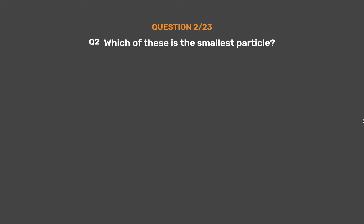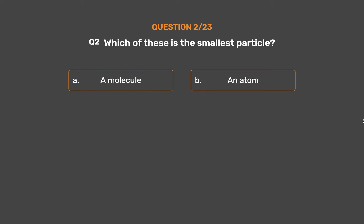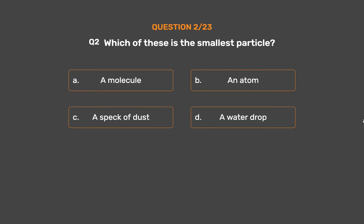Question number 2. Which of these is the smallest particle? Option A: A molecule. Option B: An atom. Option C: A speck of dust. Option D: A water drop.